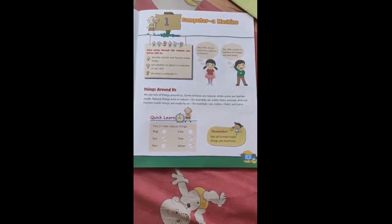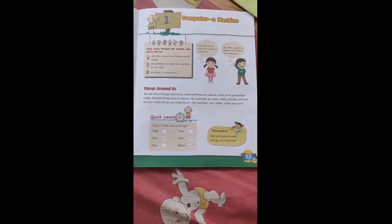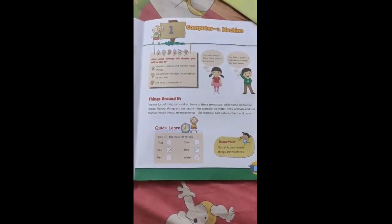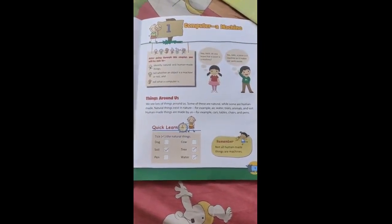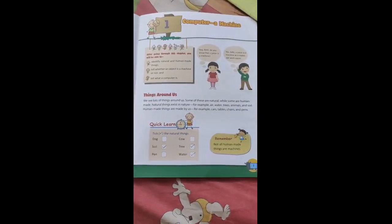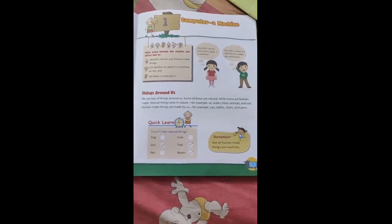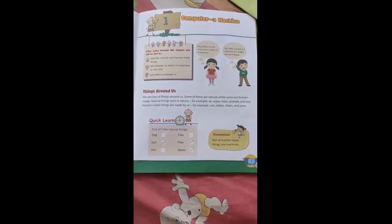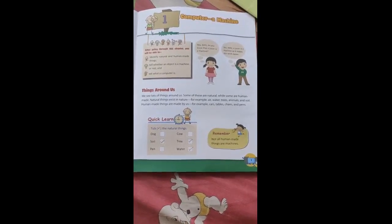We were learning Computer a Machine, Lesson 1. In this lesson dear children, we have learnt what are the things around us, what are natural things, what are human made things, and we have learnt uses of computer at different places.